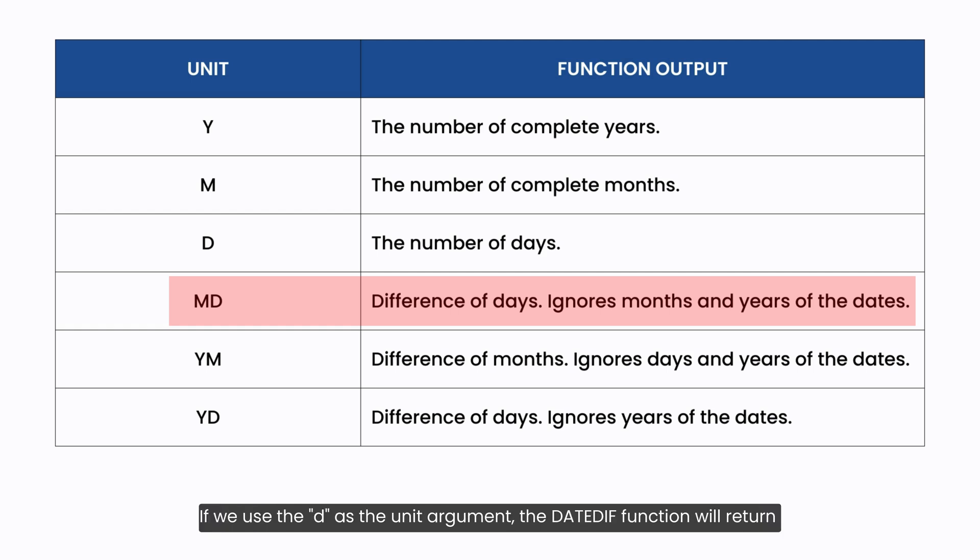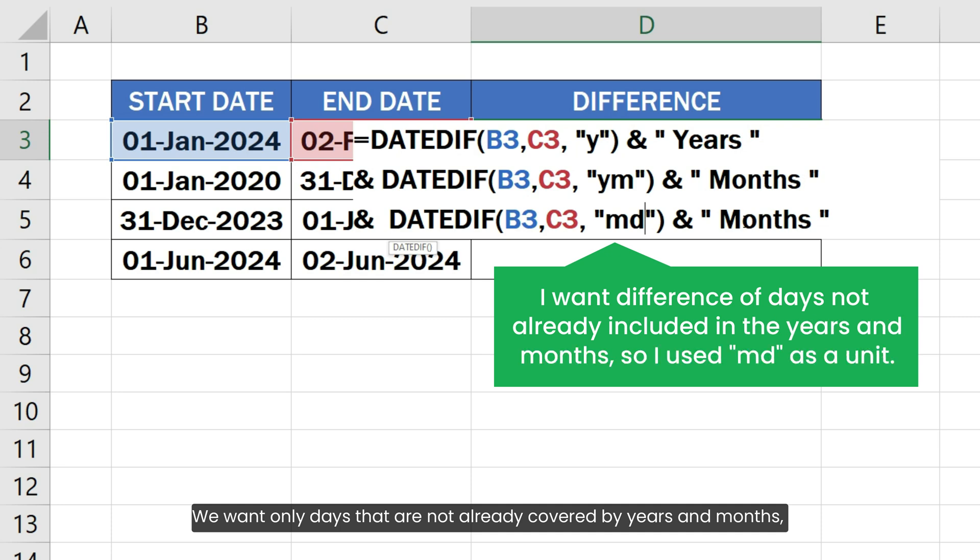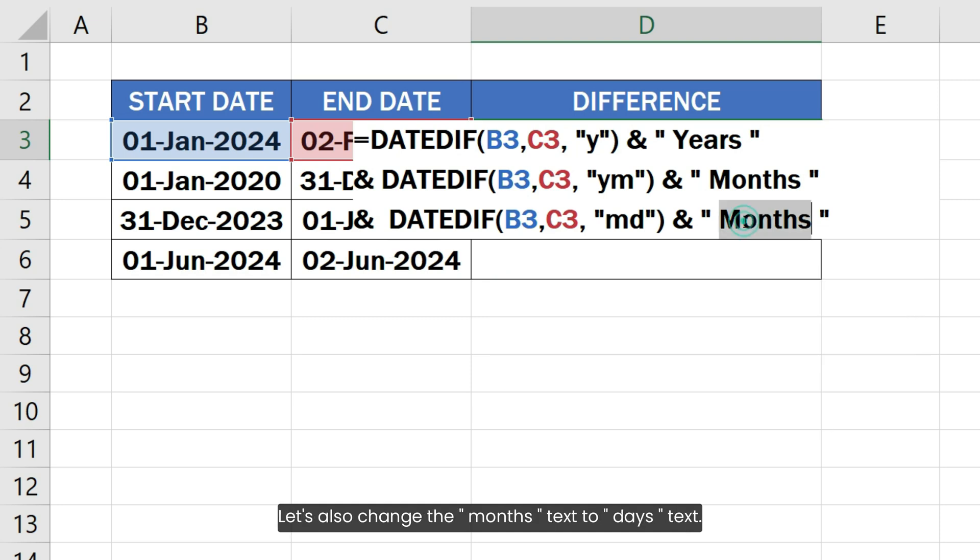If we use d as the unit argument, the DATEDIF function will return the total number of days between two dates. We want only days that are not already covered by years and months, so I used the md unit instead of d. Let's also change the months text to days text.